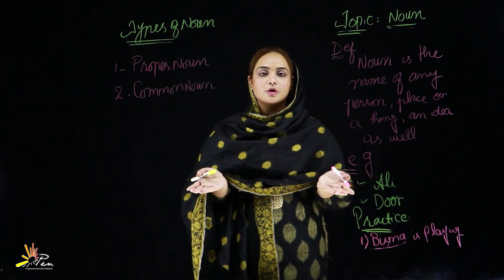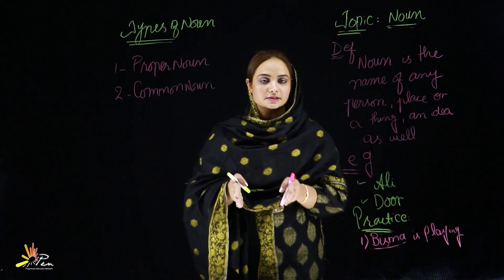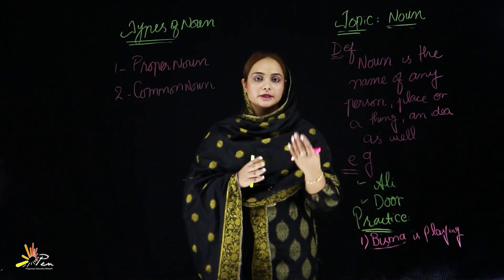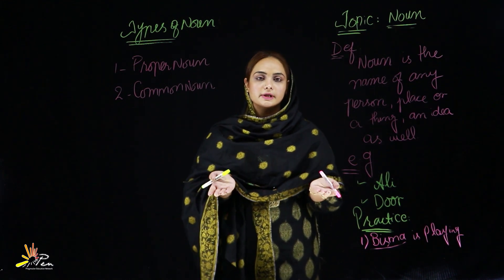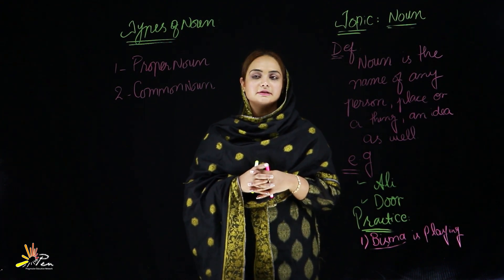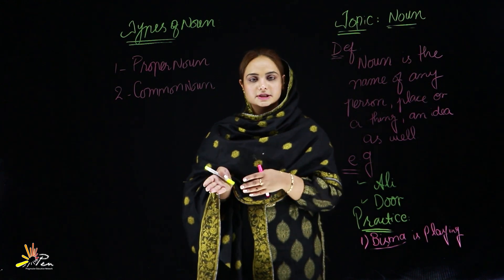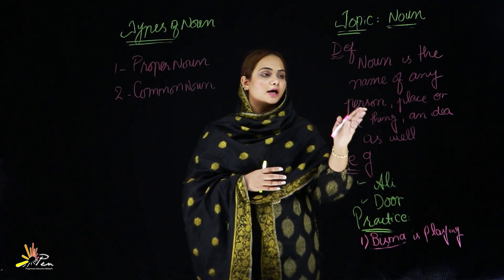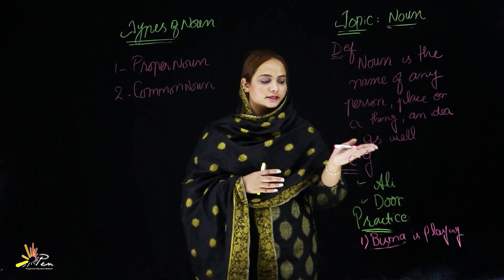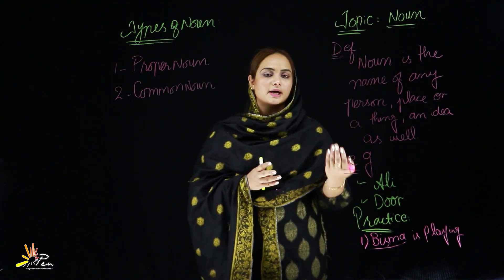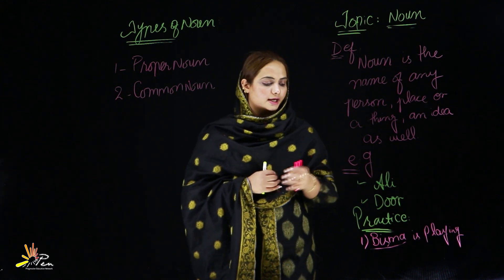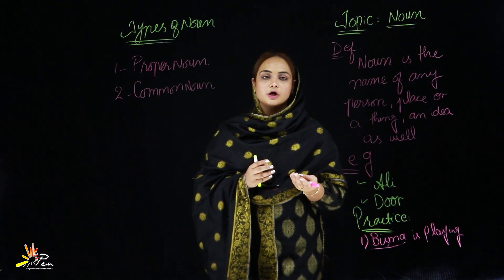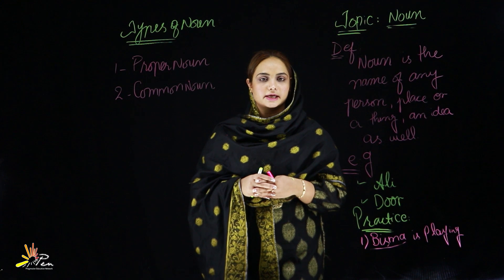Ab aap apne around mein noun ki practice kar sakte hain — sentences and their types. If I ask about the table in your room, is it a proper noun or common noun? Yes, it is a common noun, because 'table' is a very common name of a thing. Let's revise: noun is the name of any person, place or a thing including an idea. Examples: Ali, door, window, ball, basket, pen, Lahore — place will also come in noun. Whenever you read your books, identify what type of noun it is.